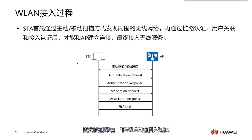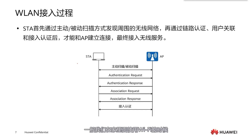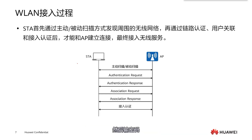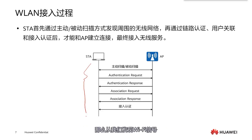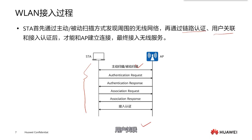First, let's look at the WLAN access process. For us users, typically when we use Wi-Fi at home, all our phones need to do is detect the Wi-Fi signal and then enter the password. But through the eyes of an engineer, this process is more complex. From discovering the Wi-Fi signal to finally accessing the Wi-Fi, there are many steps involved — link authentication, user association, and access authentication.